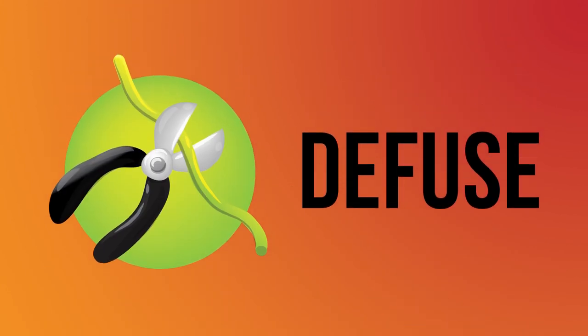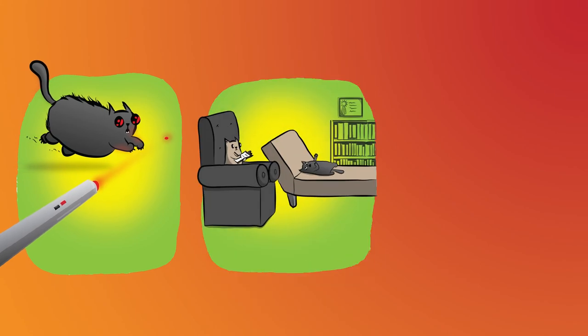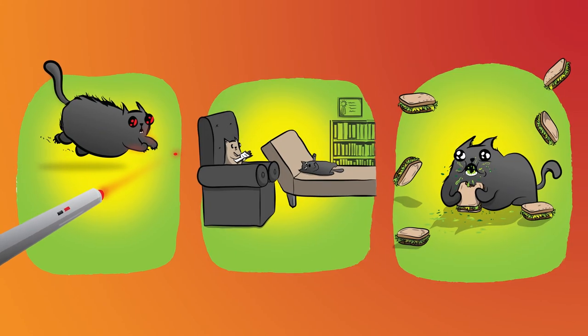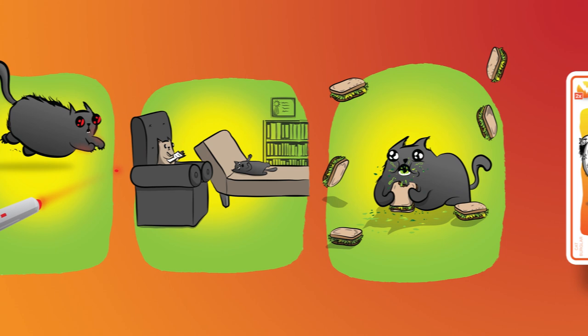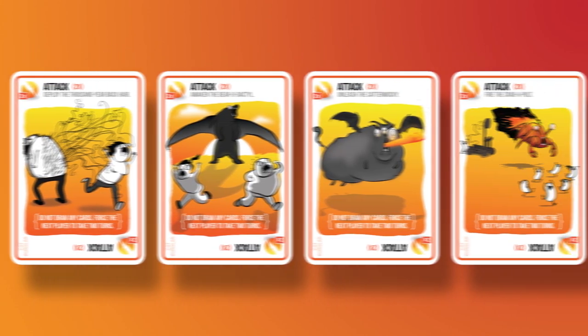Unless that player has a Diffuse card, which can diffuse the kittens using things like laser pointers, kitten therapy, and catnip sandwiches. There are also various action cards which can be used to move or avoid the Exploding Kittens throughout the game.